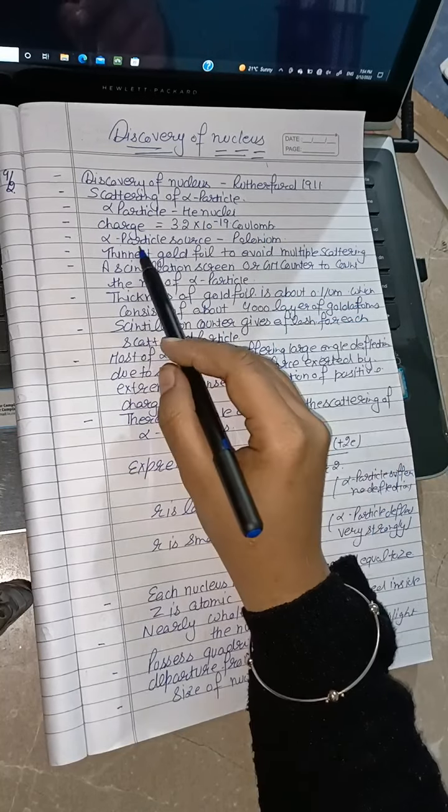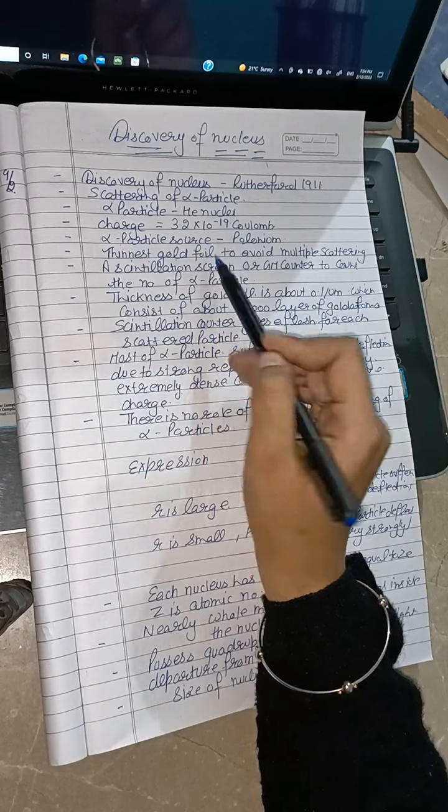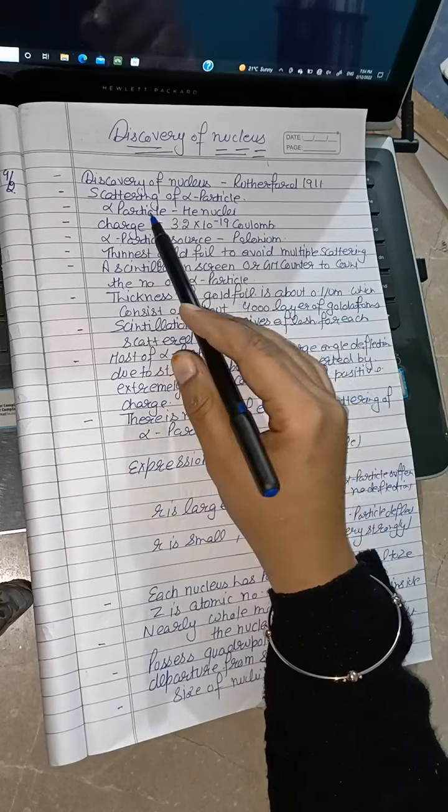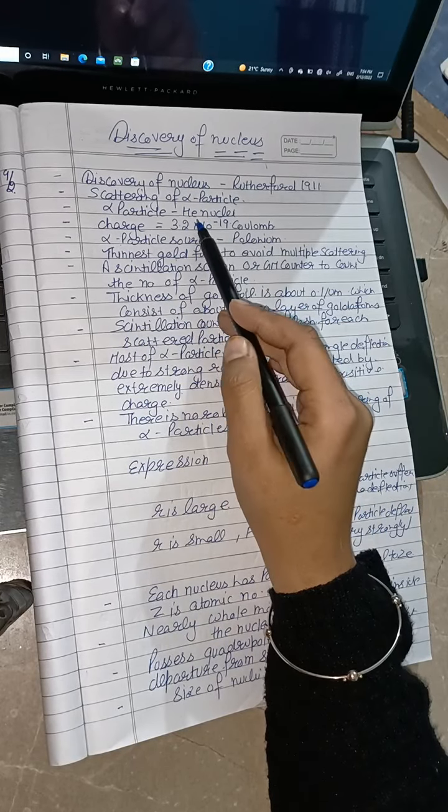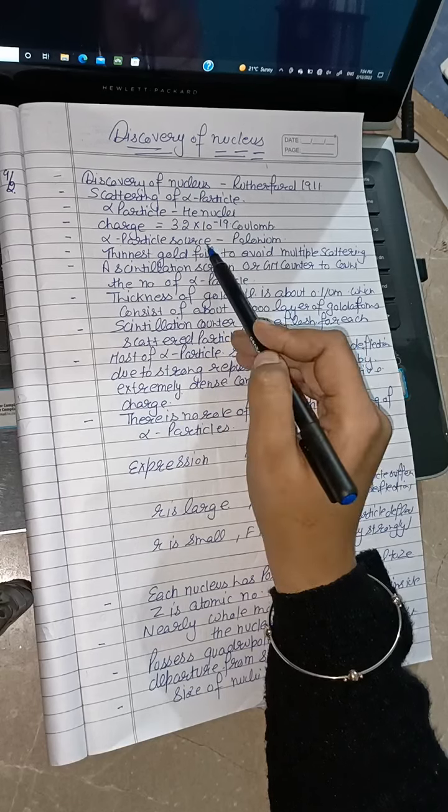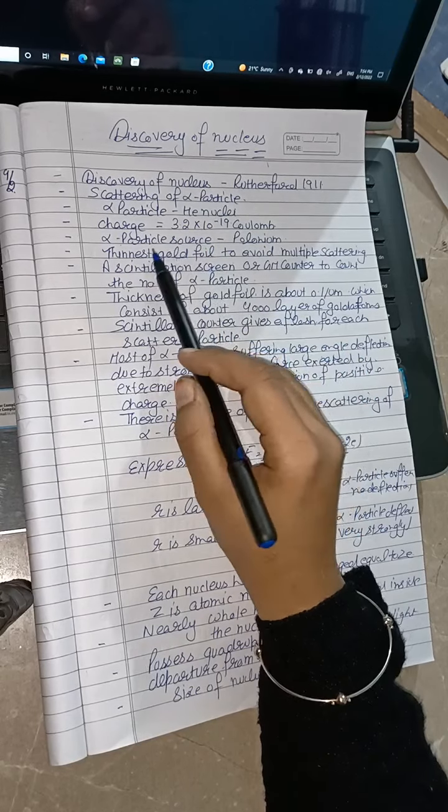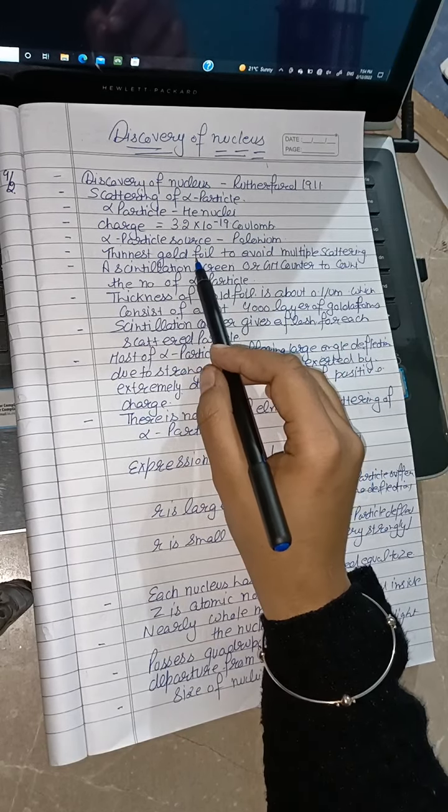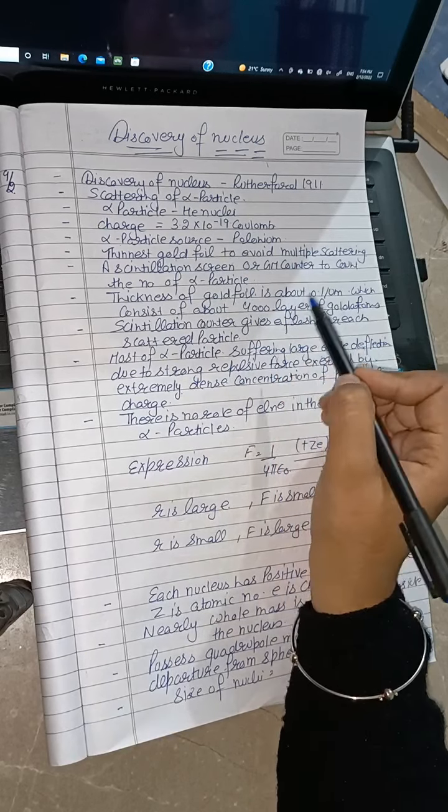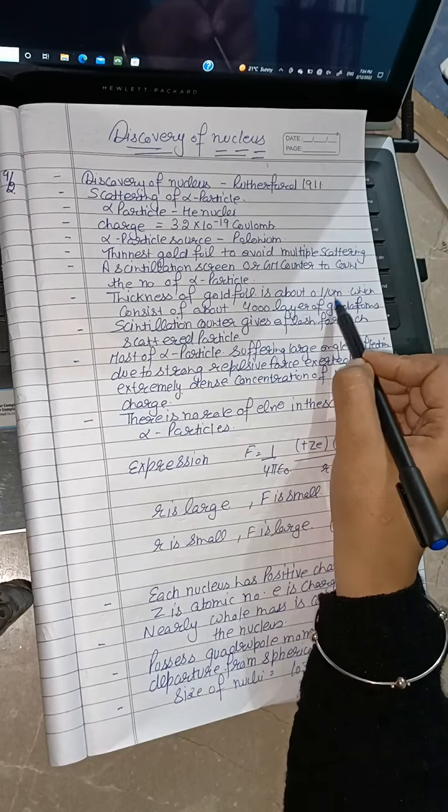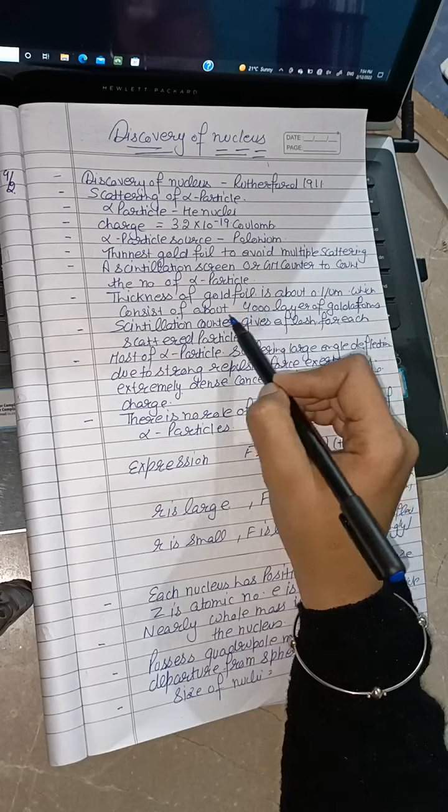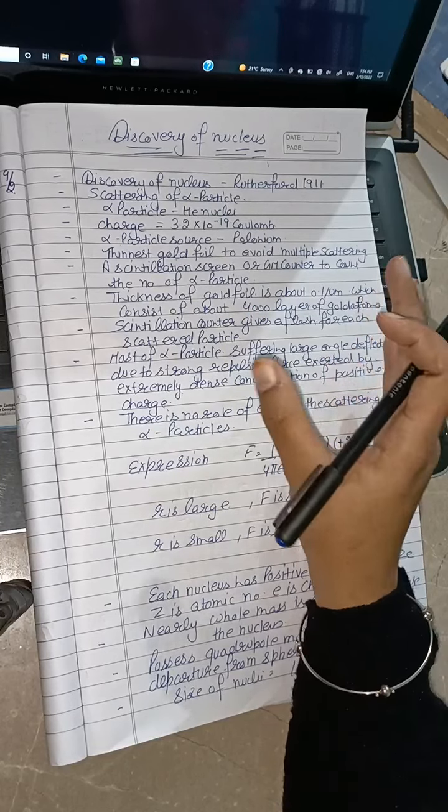The alpha particles came from polonium, which was our alpha particle source, a radioactive element. They were directed at gold foil which had a thickness of about 0.1 micrometer, containing about 4,000 gold atoms.